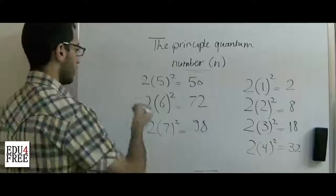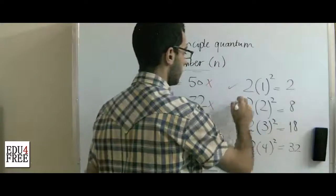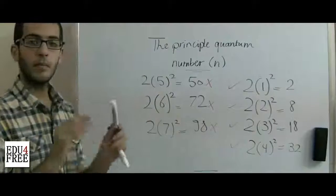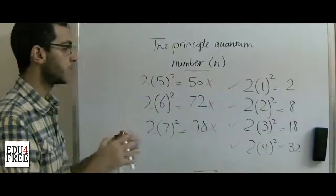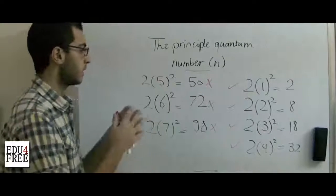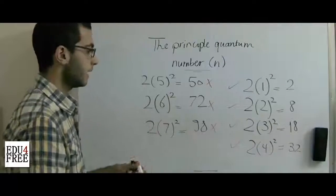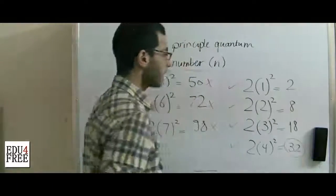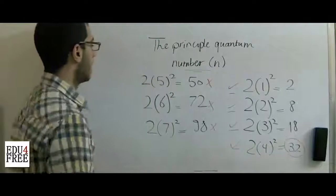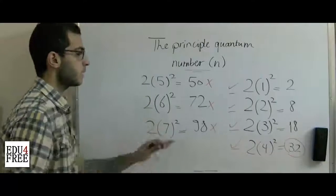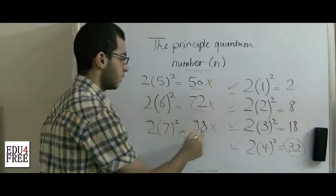However, the rule is wrong for energy levels 5, 6, and 7. The maximum number of electrons that can be found in an energy level while keeping the atom stable is 32. So while the formula applies correctly for levels 1 through 4, for levels 5, 6, and 7 the maximum number remains 32 — the formula values of 50, 72, and 98 are incorrect.